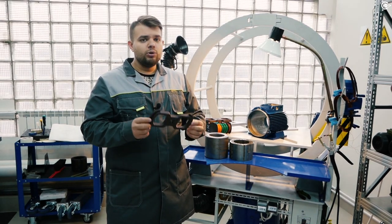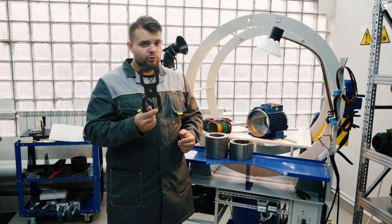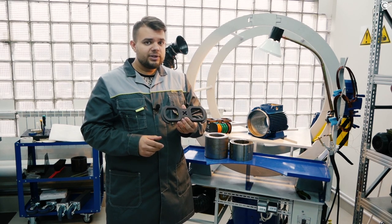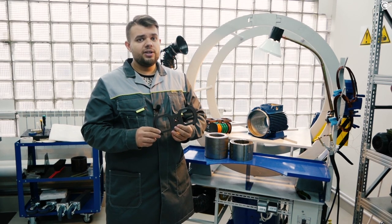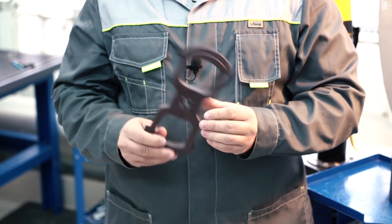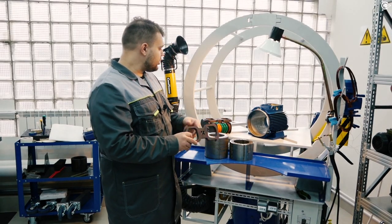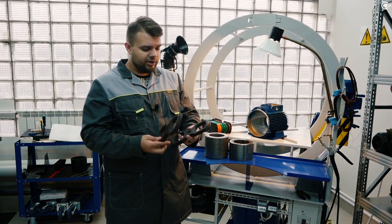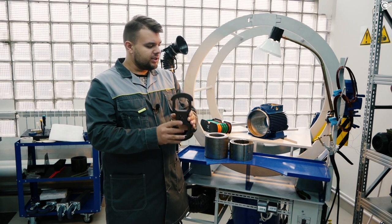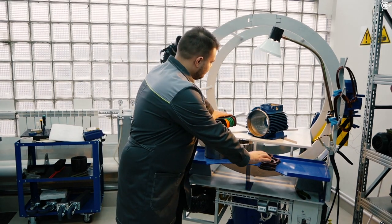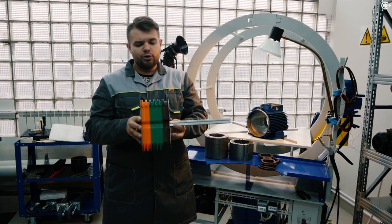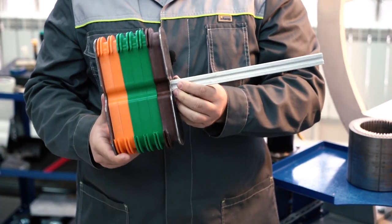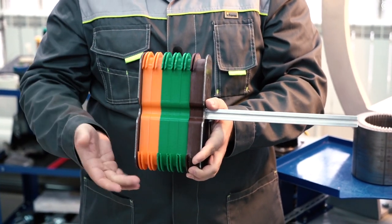In order to wind any coil, it's necessary to make the tooling itself. In our case, we produce it using the additive technologies, a 3D printer in particular. After having prepared the required amount, we mount the tooling on the special guide and then place it in the winding unit to perform the winding process.